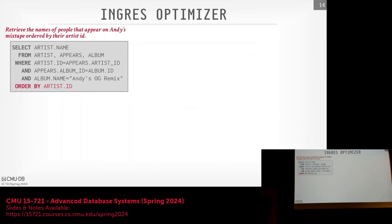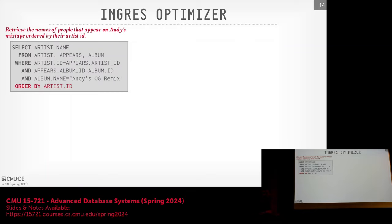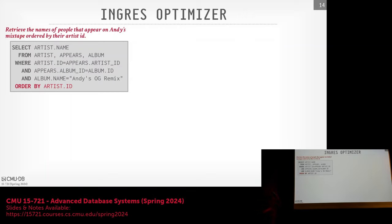Let me show what Ingress did back in the day — it's delightfully clever given the constraints at the time. The dirty secret about Ingress, at least the first version around 1974-75, is it actually couldn't do joins. So they want to support queries like this. The approach is to rewrite SQL queries into single-table queries, meaning you decompose a multi-table join into separate queries operating on individual tables.